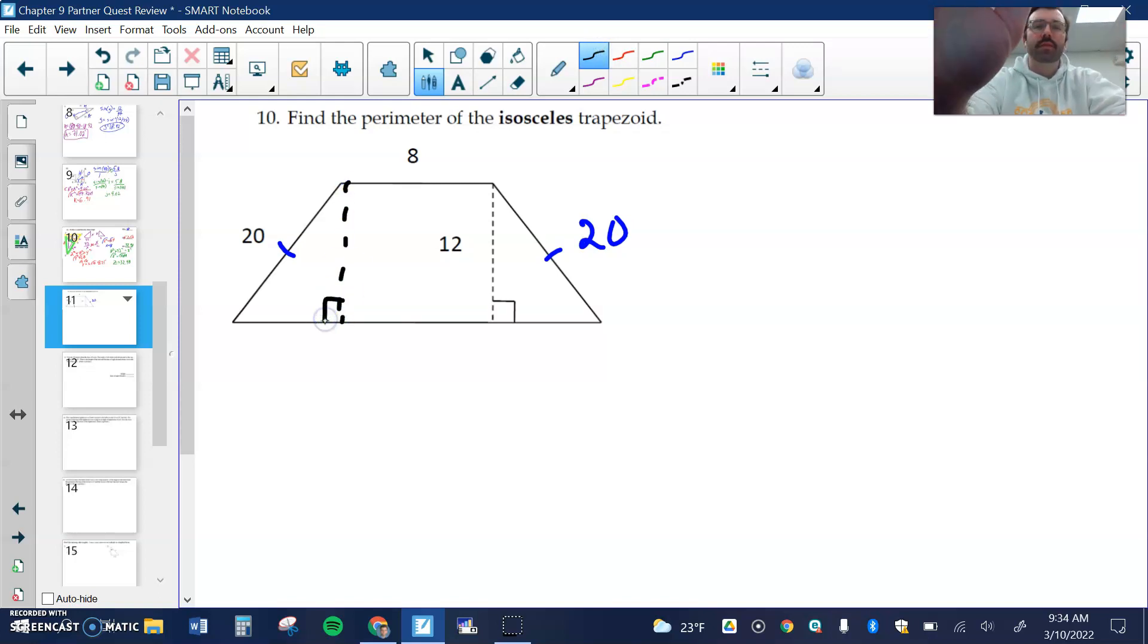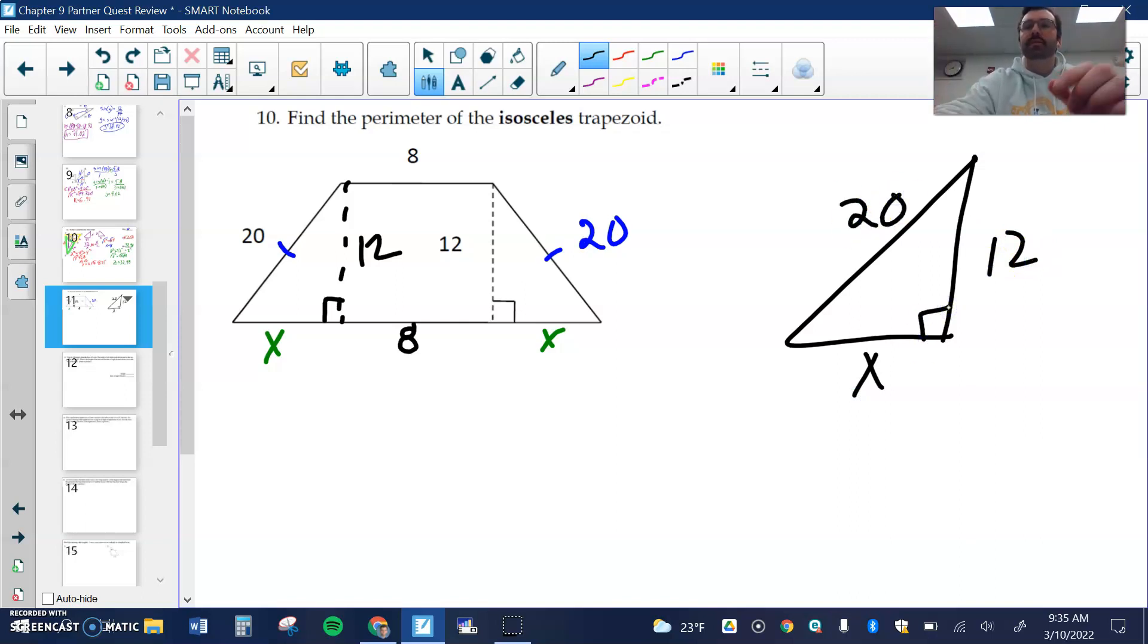And if that's 12, this is 12. This also tells me that if this is 8 up top, I do have to find this x. It'll be on both sides. So if I were to redraw this triangle, sometimes it helps people to see it: x, 12, and 20. Here's my right angle, that means 20 is going to be my hypotenuse.